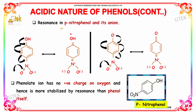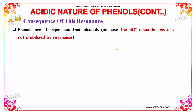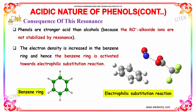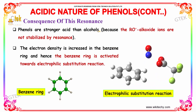Let us now see the resonance in para-nitrophenol and its anion. The OH group produces a positive sign and shifts the double bond character in para-nitrophenol. The phenolate ion of para-nitrophenol has no positive charge on oxygen and hence is more stabilized by resonance than phenol itself.